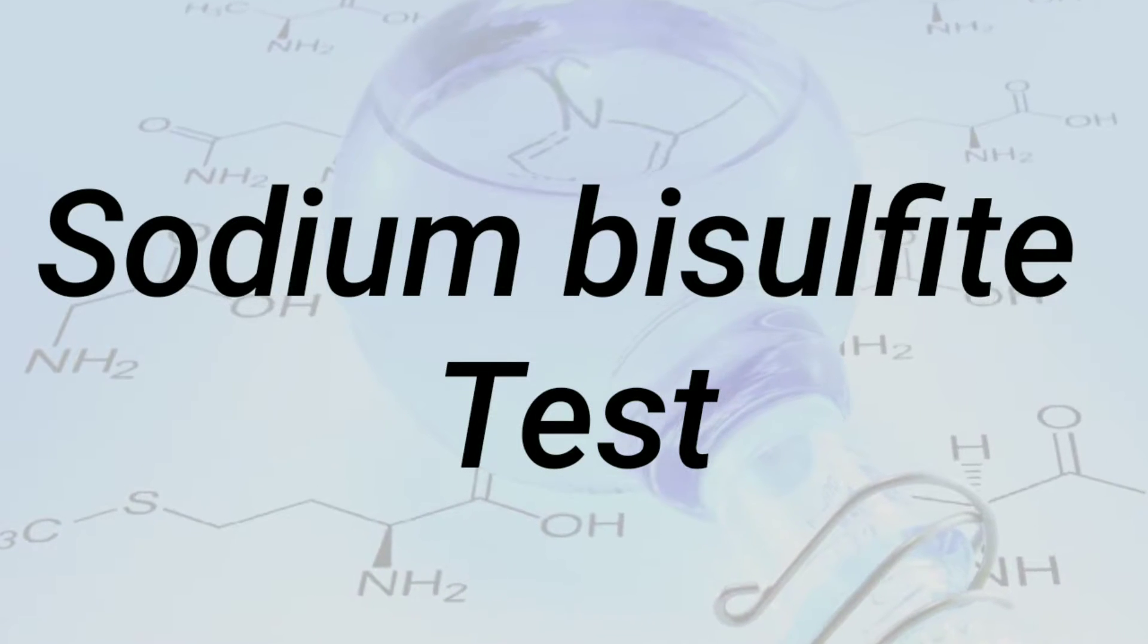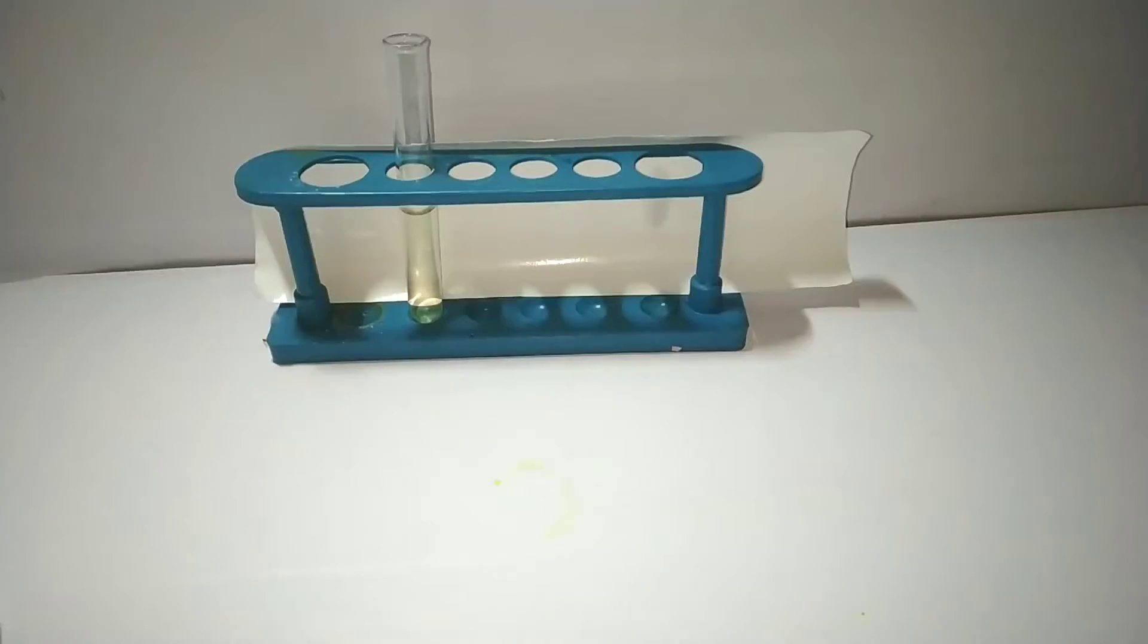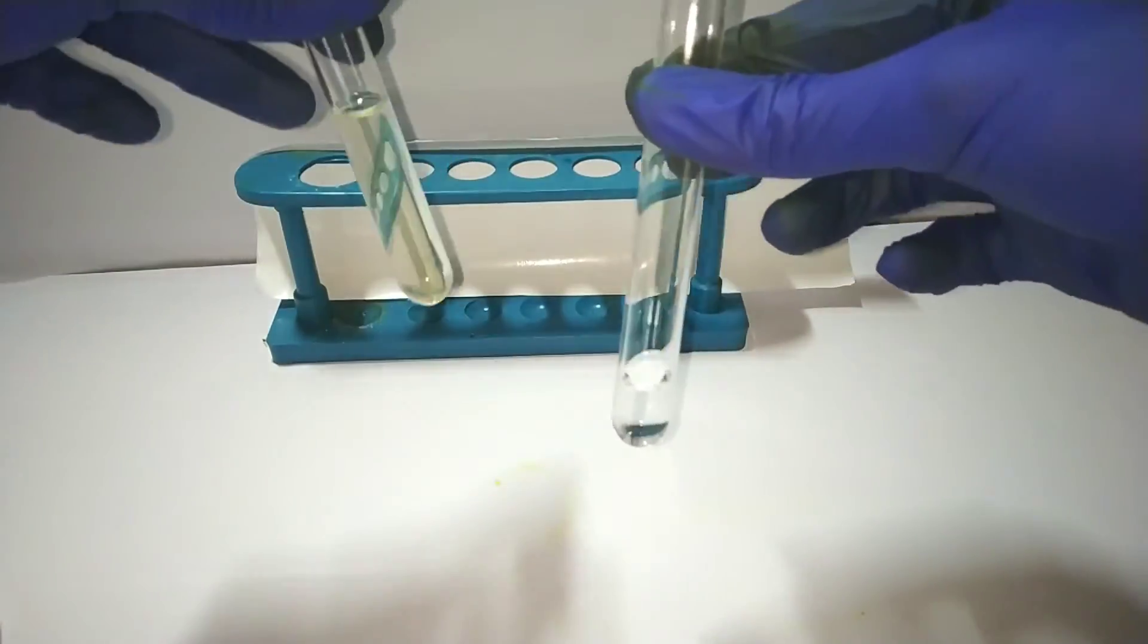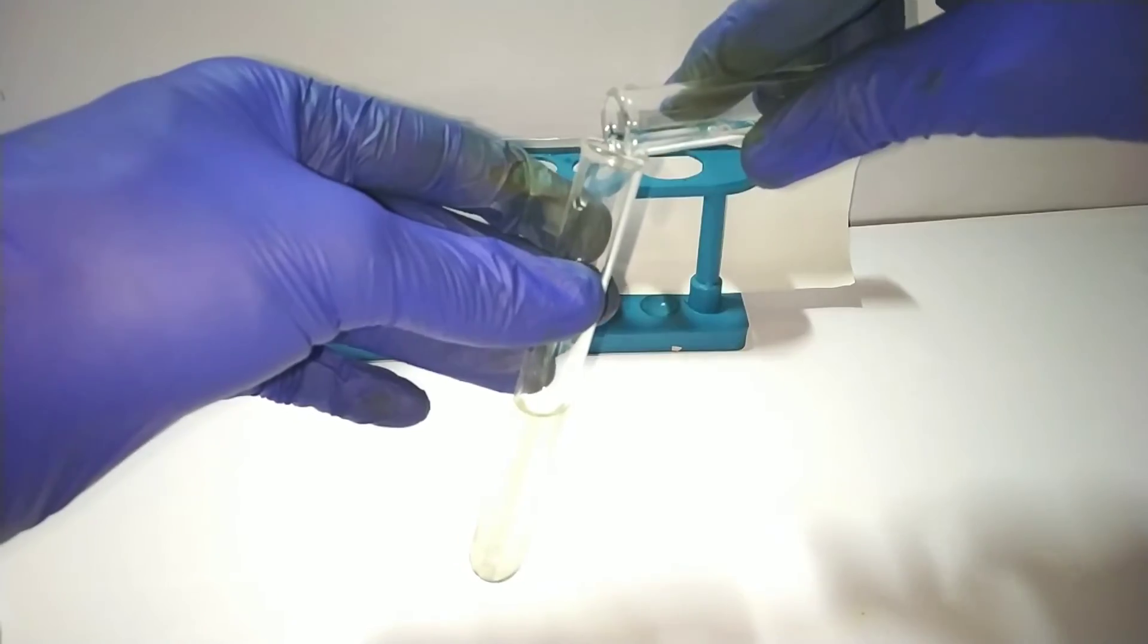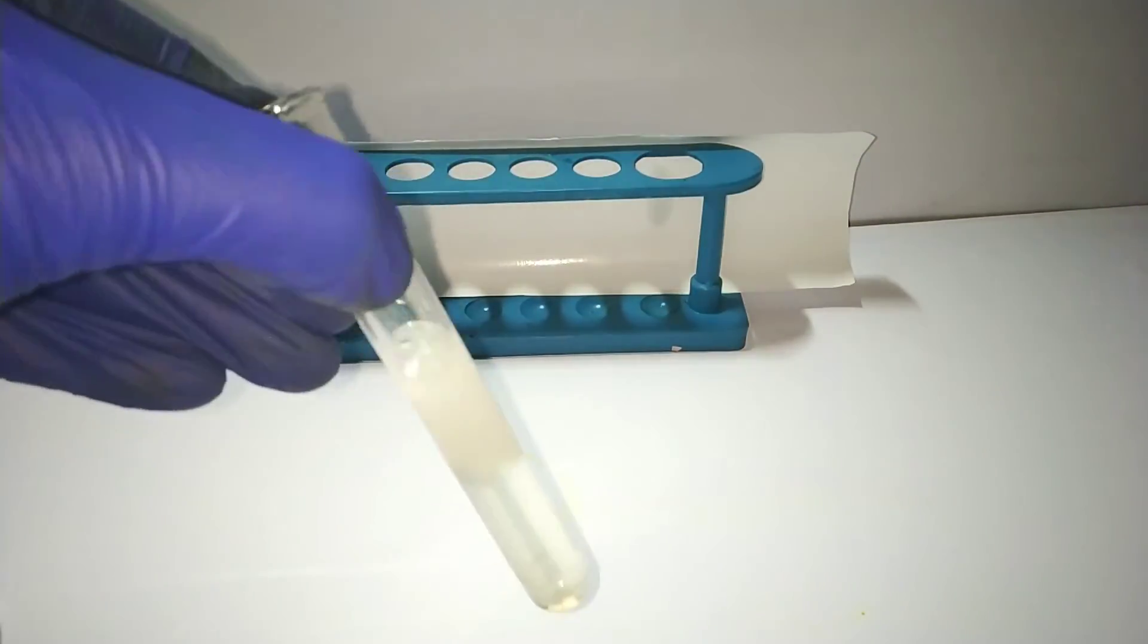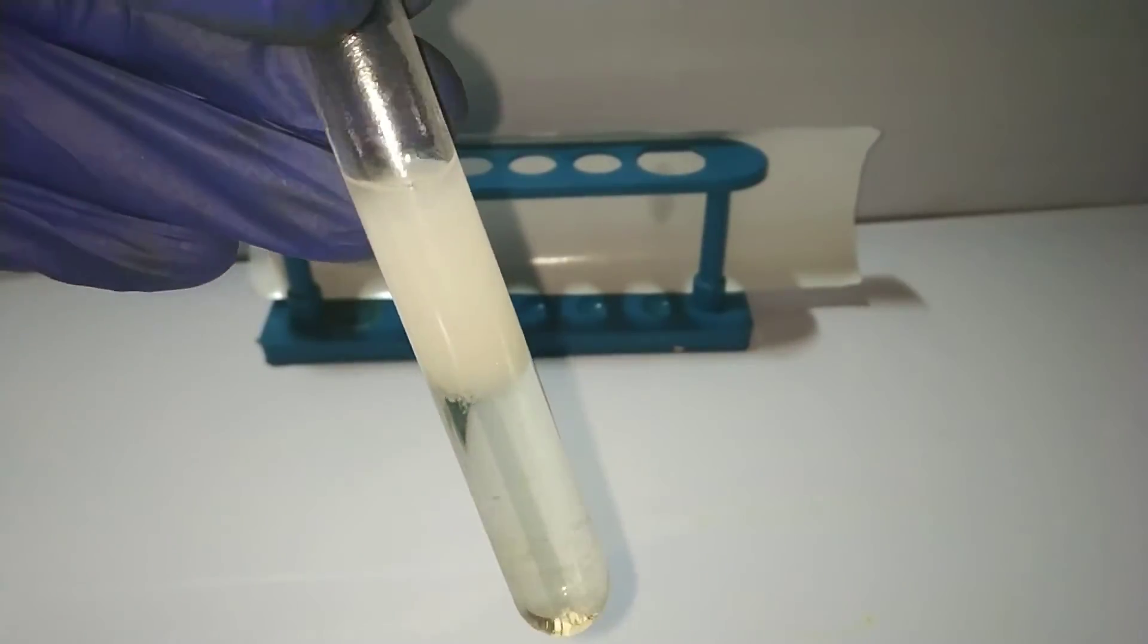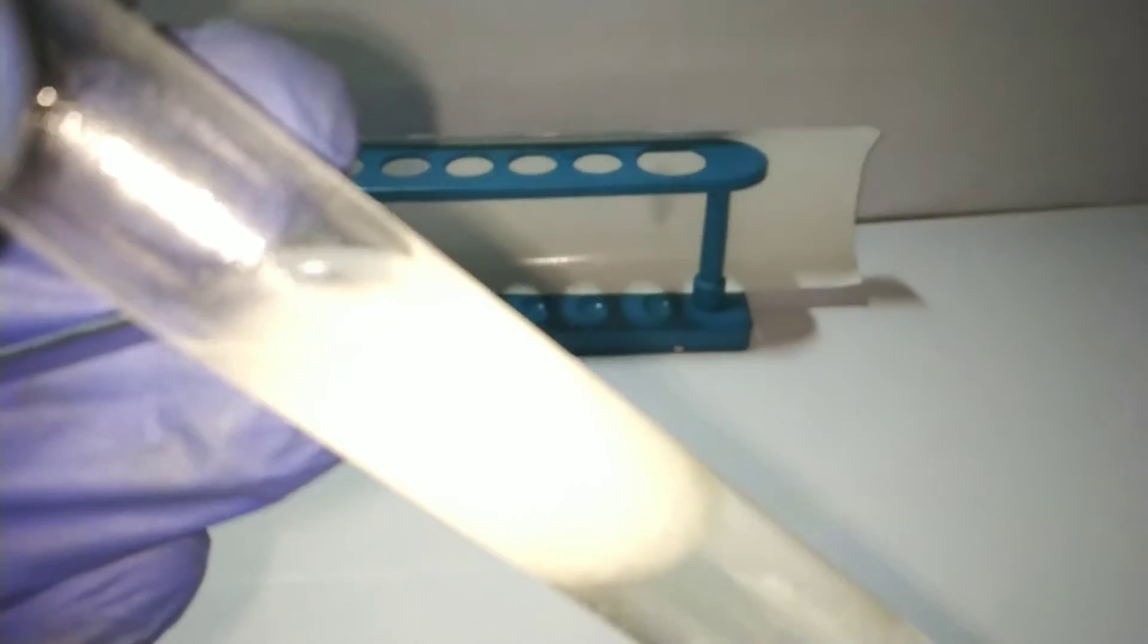Sodium bisulphite test. For this test we need a saturated solution of sodium bisulphite. Into that we add the organic compound. On adding that, it forms a crystalline product which is a bisulphite adduct, and the reaction is shown above.